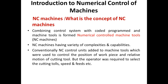With conventional NC control units, we simply control the position of the tools and the position of the work piece, where the relative motion of the cutting tool is controlled. However, the operator was required to select the cutting tools, speed, and feed. NC technology has been applied to a wide variety of operations including drafting, assembly, inspection, sheet metal press working, and spot welding.